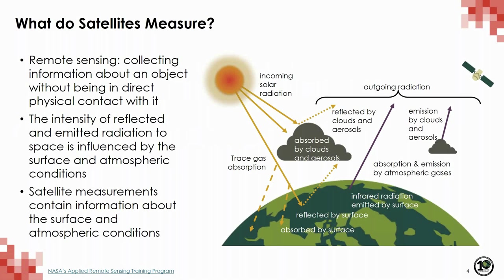To remotely sense something is to collect information about an object without being in direct physical contact with it. Our eyes are an example of a remote sensing system — your eyes receive information about a scene in the visible wavelengths of the electromagnetic spectrum, and your brain processes and interprets this information. Passive sensors, like OMI or TropoMe, depend on the sun as the sole source of light or energy. Solar radiation passes through the atmosphere, hits a target surface like forest, water, or city, and is either absorbed, reflected, or transmitted back through the atmosphere.